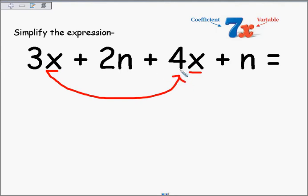3x, what do I do with this for? Plus, I add it, 4x. So 3x plus 4x, 3 plus 4 is 7x.